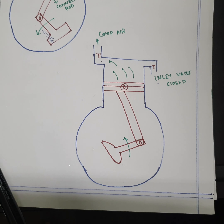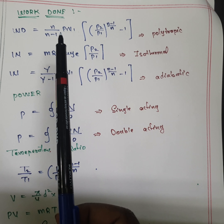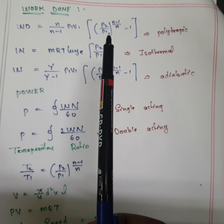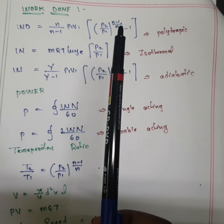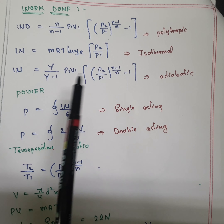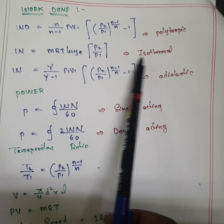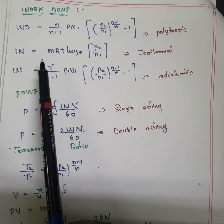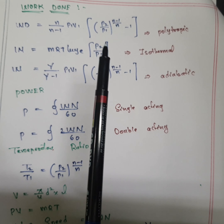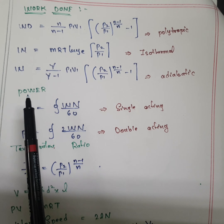There are formulas to solve reciprocating compressor problems. Work done for a polytropic process: W = n/(n-1) × P₁V₁ × [(P₂/P₁)^((n-1)/n) - 1]. For isothermal process: W = mRT × log(P₂/P₁). For adiabatic process, use gamma (1.4) instead of n. If n = 1.4 in a question marked adiabatic, treat it as adiabatic.